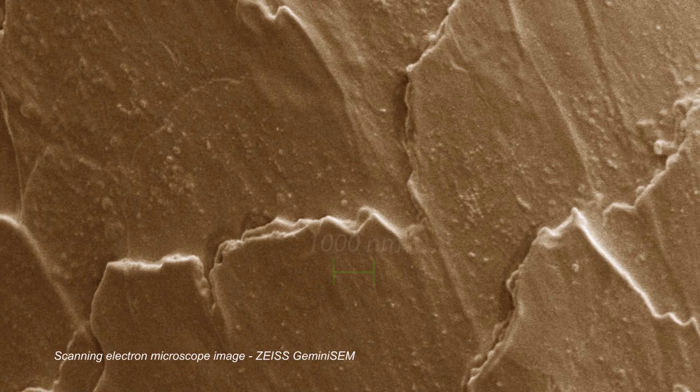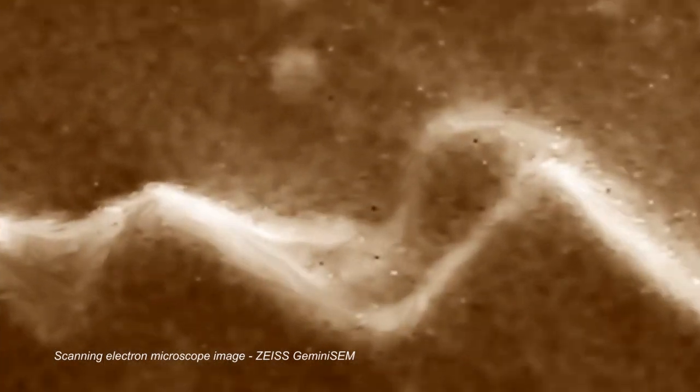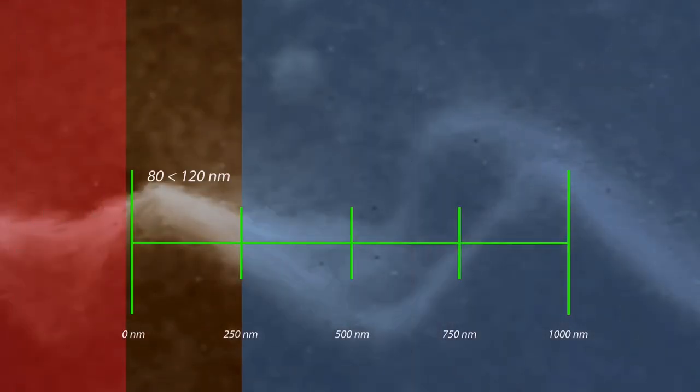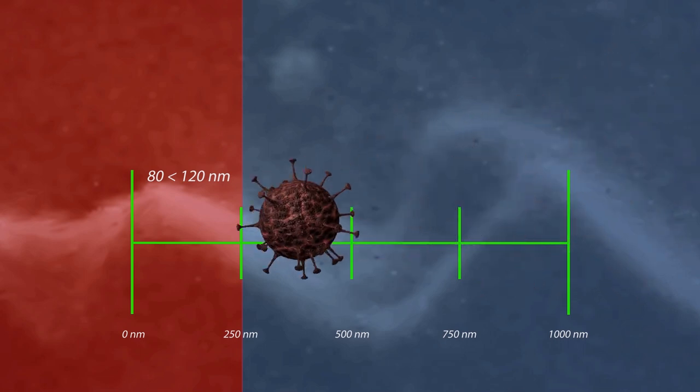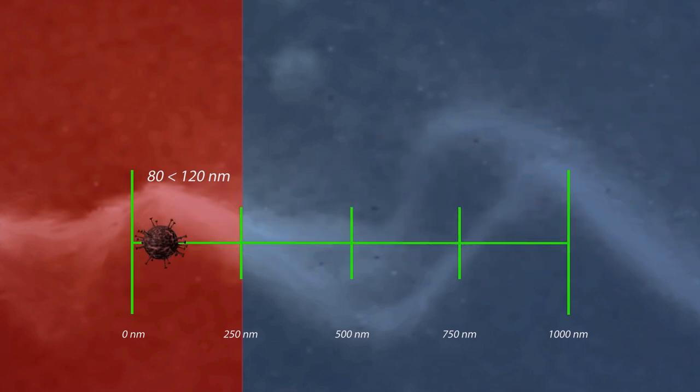The Rayleigh limit is around 250 nanometers. A typical flu virus is between 80 to 120 nanometers. Very, very small, and well below the Rayleigh limit. So the virus is just a blur. There is no direct visual information.